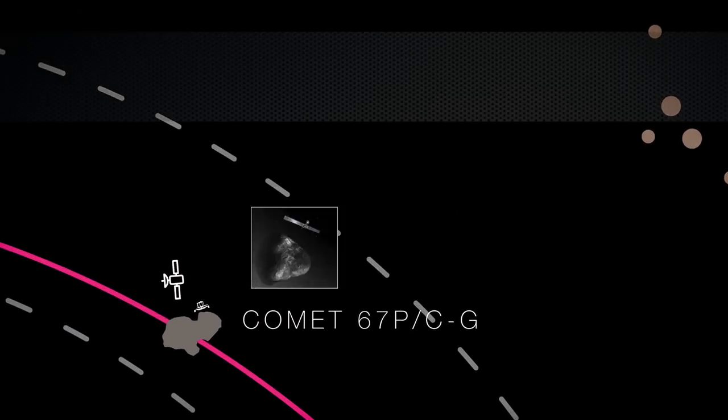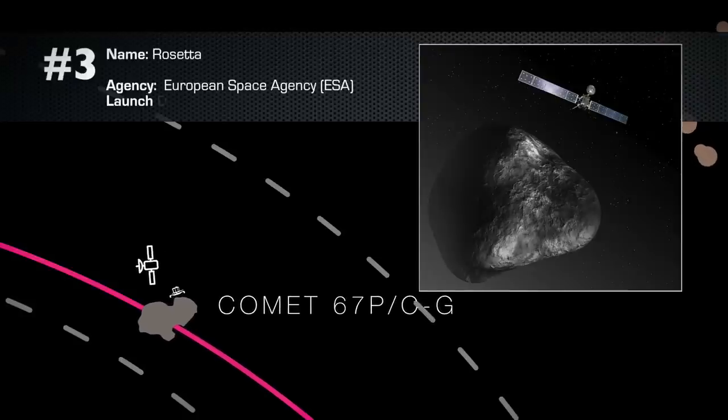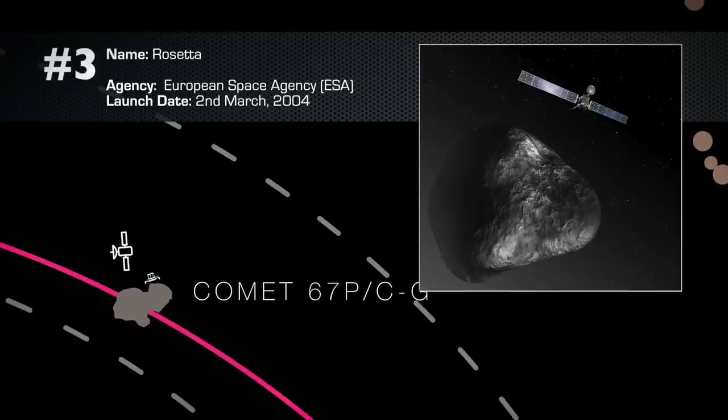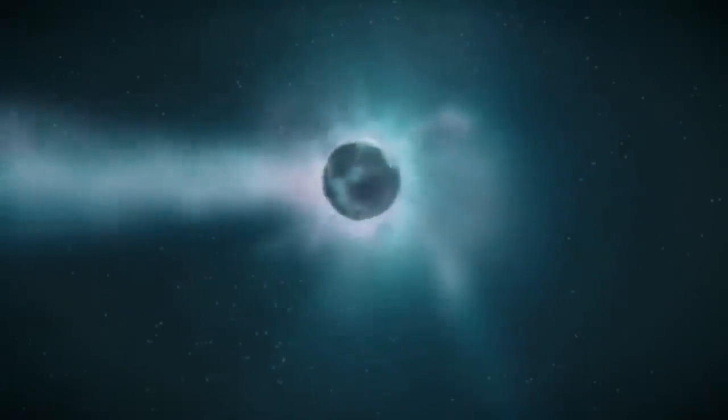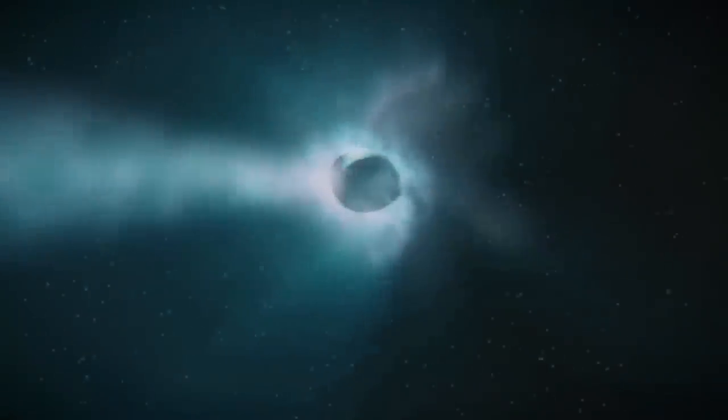At number three, of all humanity's crazy slingshots into space, the Rosetta mission might just be the most impressive. Here's the brief. A fresh comet has come into the solar system, sucked out of the Kuiper belt by Jupiter's enormous gravity less than 50 years ago.